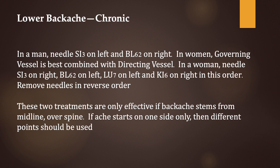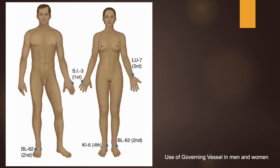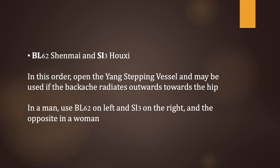For the governing vessel combination: in a man, needle SI3 on the left and Bladder 62 on the right. In women, the governing vessel is best combined with the directing vessel — needle SI3 on the right, Bladder 62 on the left, LU7 on the left, and Kidney 6 on the right, in this order; remove the needles in reverse order. These treatments are only effective if the backache stems from the midline over the spine. If the ache starts on one side only, different points should be used. Bladder 62 and SI3, in this order, open the yang stepping vessel and may be used if the backache radiates outwards towards the hip — in a man, use Bladder 62 on the left and SI3 on the right, and the opposite in a woman.